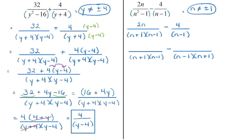Looking at the lowest common denominator, I need n minus 1 — that's in both of them — but I also need n plus 1. So in terms of my first denominator, nothing changes from the original to my common denominator, so I can just write 2n on top. For the second denominator, I started with n minus 1, and now we also have n plus 1, so I multiplied the denominator by n plus 1. I multiply the numerator by n plus 1 to keep it equivalent — giving me 4 times n plus 1. Non-permissible values: n cannot equal negative 1 or positive 1.